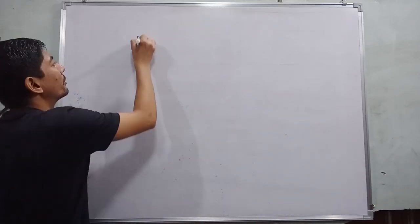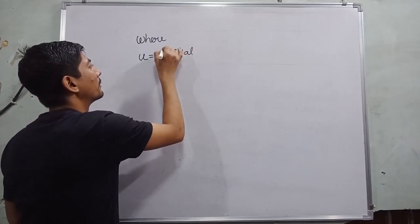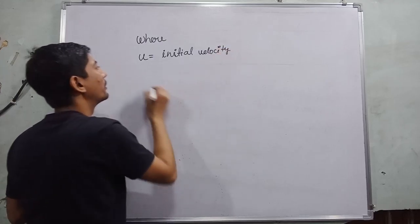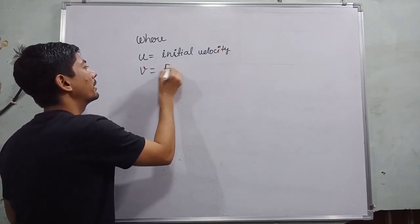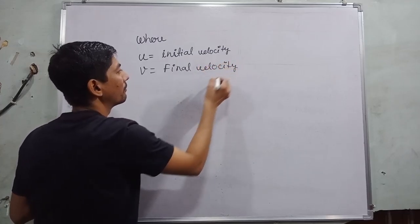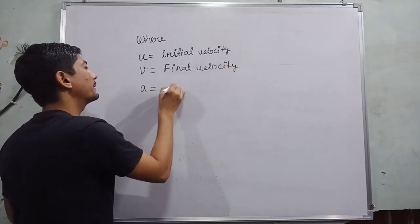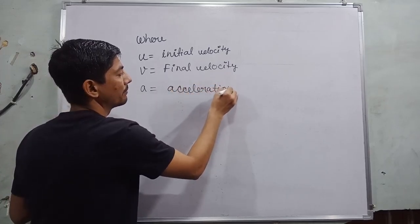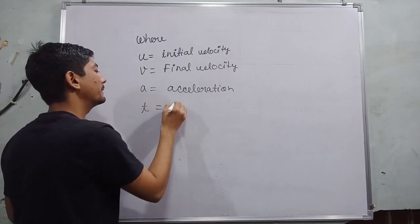u is initial velocity, v is final velocity.